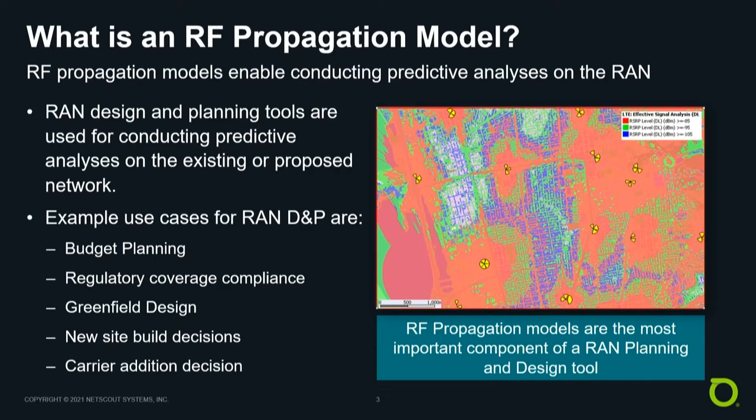RF propagation models reside within the RAN planning tools, and they are the heart and soul of the tool. When accurate, they facilitate predictive analyses such as coverage, interference, signal-to-noise ratio, throughput, and many other important types of analysis that are used in decision-making.